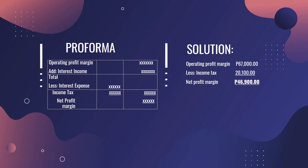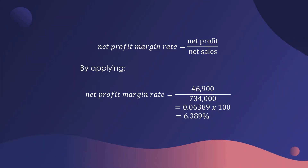Now that we have computed the net profit margin, we compute the net profit margin rate. The formula is: Net Profit divided by Net Sales. With a net profit of 46,900 divided by total net sales of 734,000, we get 6.39%. XYZ Trading appears to have earned 6.39% of its total sales of 734,000 pesos during the year. This profit rate must be compared with those of other similar businesses within the industry — it is our job as entrepreneurs to check how our business compares.